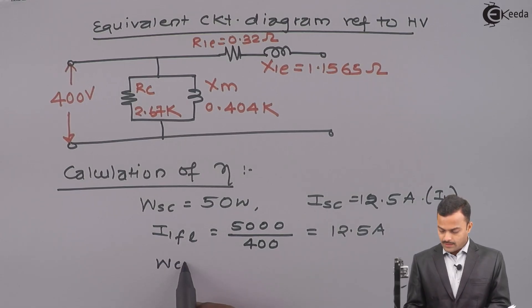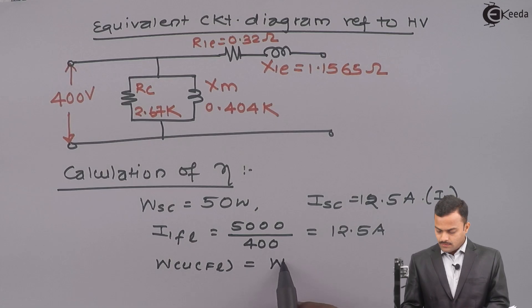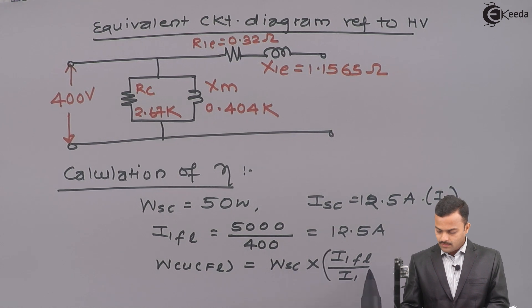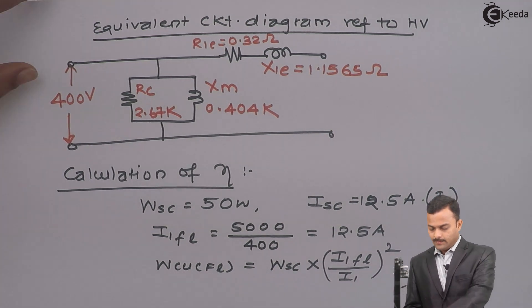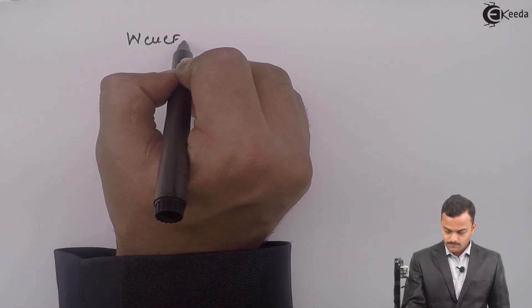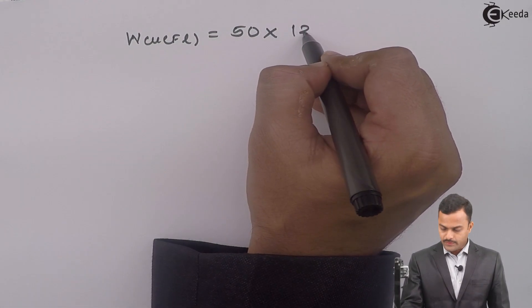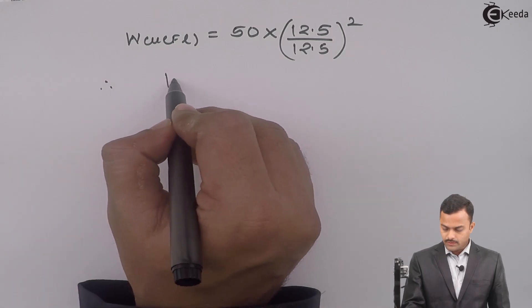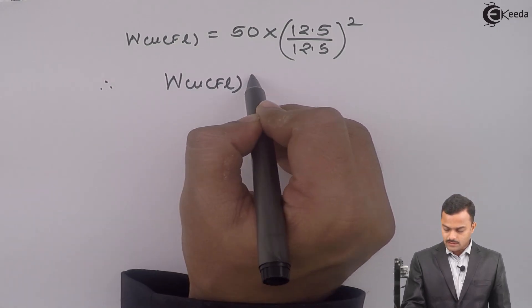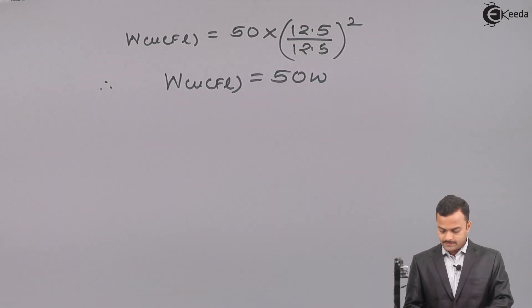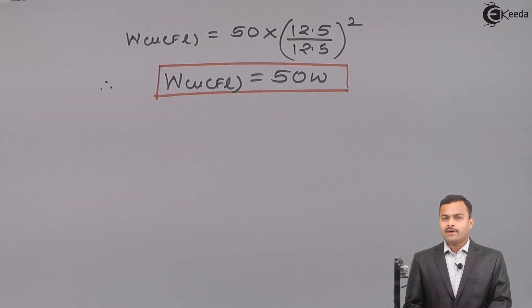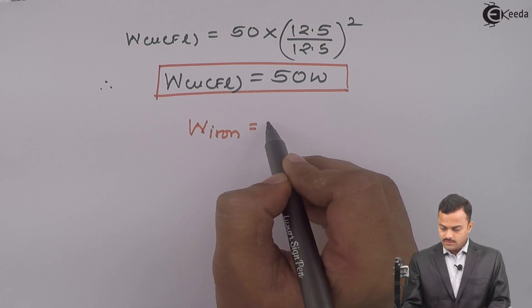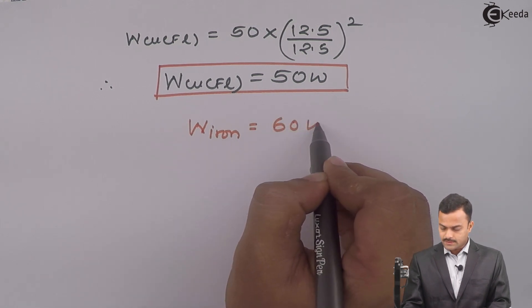So, WCUFL nothing but WSC multiplied by I1FL upon I1 square. So, WSC is 50. I1FL is 12.5 and I1 is also 12.5. So, if you solve you will get full load copper loss that is nothing but 50 Watt. Whatever power you are obtaining in an open circuit test that is nothing but iron loss. W iron or you can say iron loss given as 60 Watt.